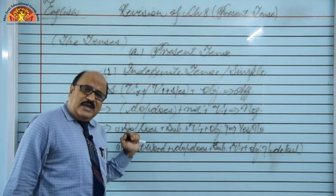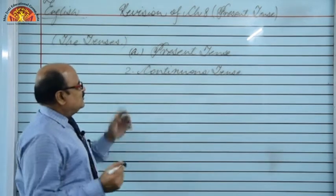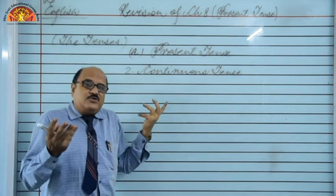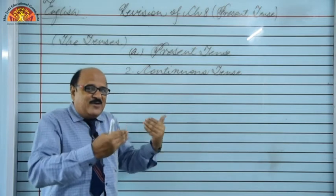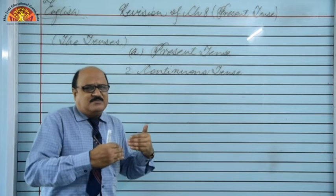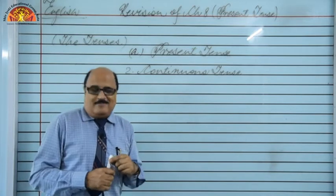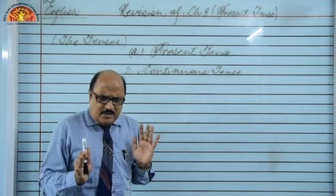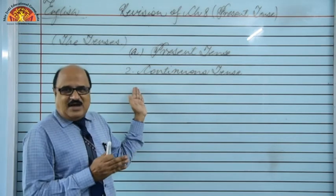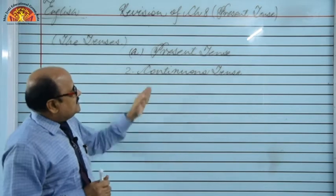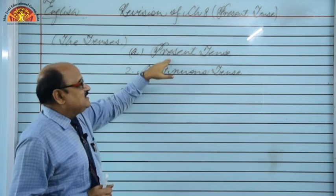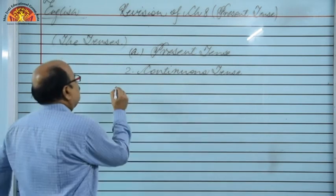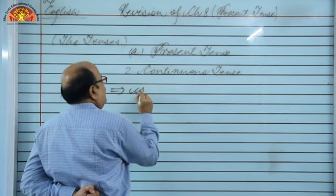Now let us switch to present continuous tense. What is continuous tense? We are talking about an action that is going on at the time when we are speaking — at present, something is going on. For example: 'What are you doing?' — 'I am sitting. I am standing. I am teaching you. You are learning.' All these sentences are examples of present continuous tense. Present plus continuous means: whatever activity is currently going on, that reflects present continuous tense.